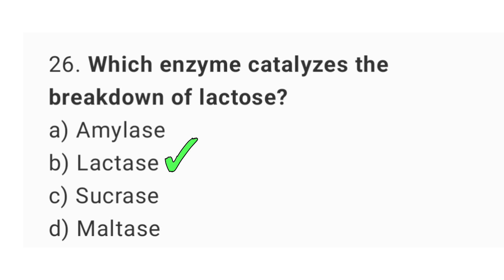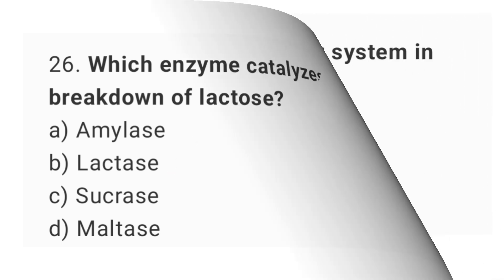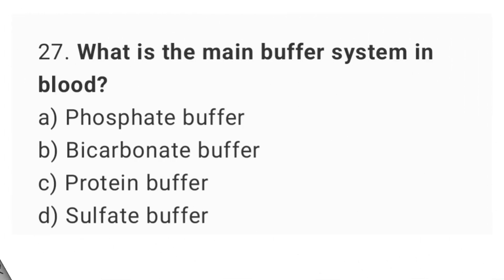Question number 27: What is the main buffer system in blood? The right answer is option B: Bicarbonate buffer.